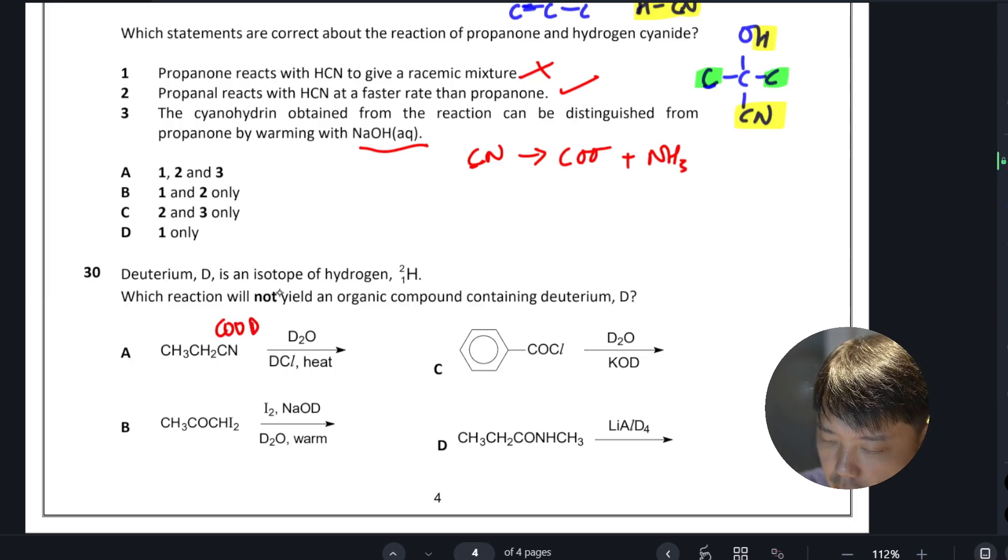...EOD which contains deuterium, so A is out. For B, you will get EBI3 instead of CHI3.